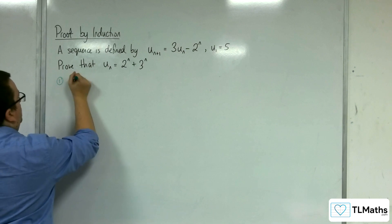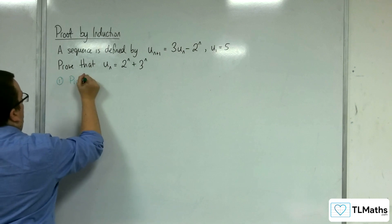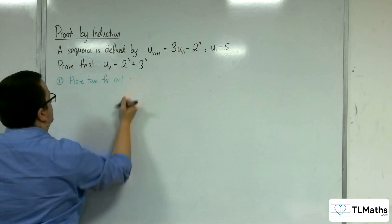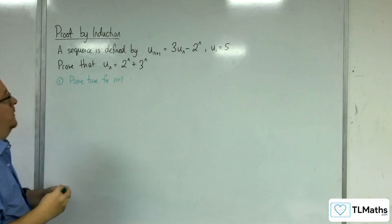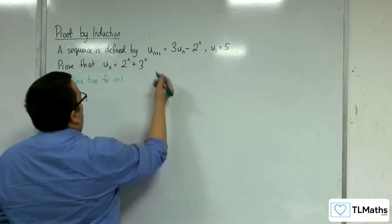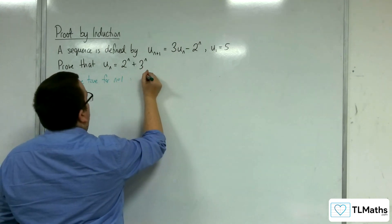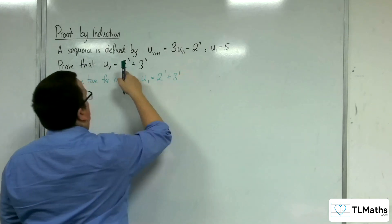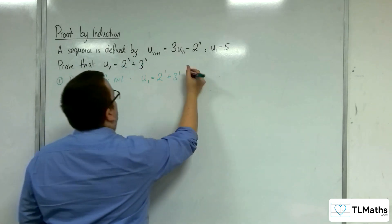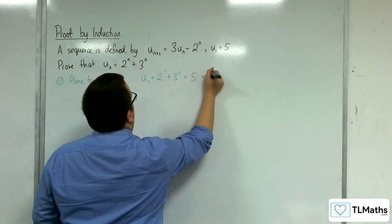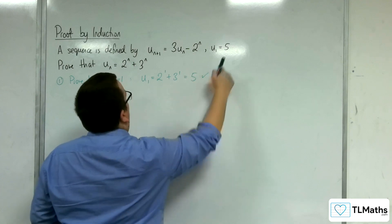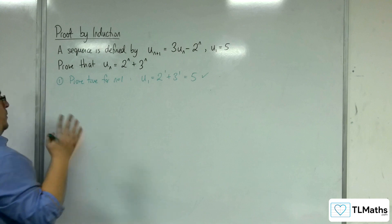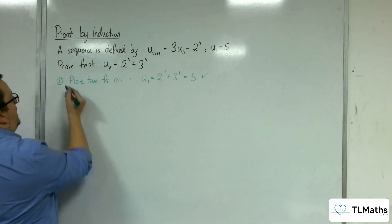Stage 1: prove it's true for n = 1. So u_1 = 2^1 + 3^1, which is equal to 5, which confirms that initial condition. So we know it's true for n = 1.